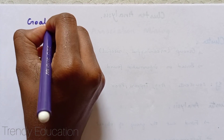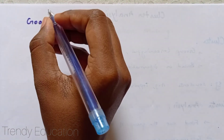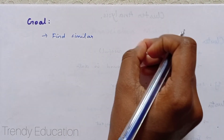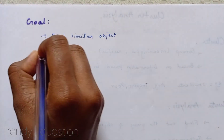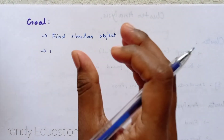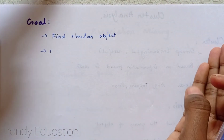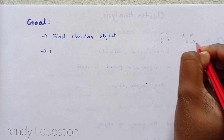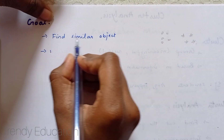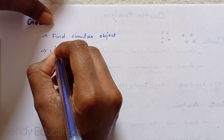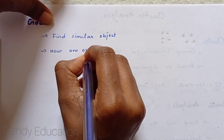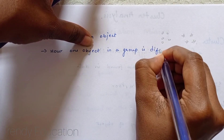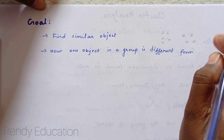Now coming to the goal of cluster analysis — there are only two goals. The first is to find the similar or related objects, meaning we find the round shapes alone. The second goal is how one object in a group is different from an object in another group — for example, how this round shape is different from this star shape.